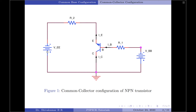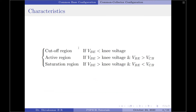Moving on to the characteristics: to forward bias a transistor, the base-to-emitter junction must be forward biased and the collector-to-base junction must be reverse biased — this is the active region. If both junctions are forward biased, the transistor enters the saturation region. If the base-to-emitter voltage is less than the built-in turn-on voltage (the new voltage), the transistor is in cutoff. If VBE is greater than the new voltage and also greater than VCB, the device is in the active region. If VBE is greater than the new voltage but less than VCB, the device enters saturation.